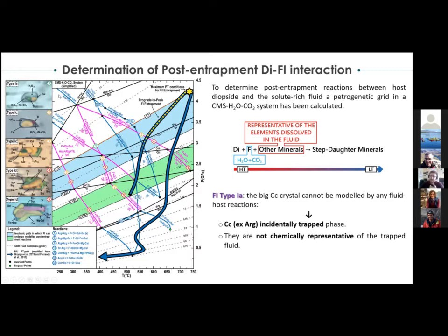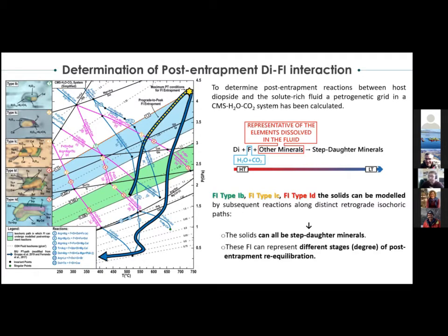From all the modeled reactions, we can extract the violet-marked univariant equilibria, which can explain all the observed mineral associations within Type 1 fluid inclusions, except for the single large crystal in Type 1A, since no single reaction is capable of producing only calcite. This means that the large calcite crystals in Type 1A fluid inclusions must be accidentally trapped, and therefore Type 1A fluid inclusions are not representative of the originally trapped fluid. However, all other Type 1 fluid inclusions are reproduced by these reactions, meaning all included mineral phases can be regarded as step-daughter minerals derived from chemical interaction between the fluid and the host minerals.